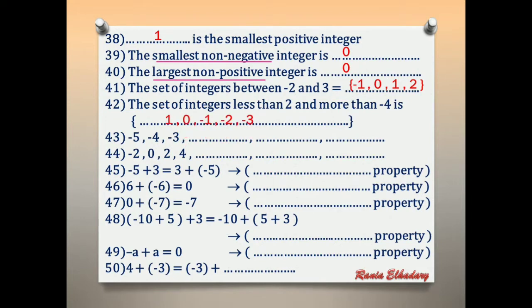Number 43: we have the pattern negative 5, negative 4, negative 3. We are adding 1 each time. So the answer continues: negative 2, negative 1, 0.